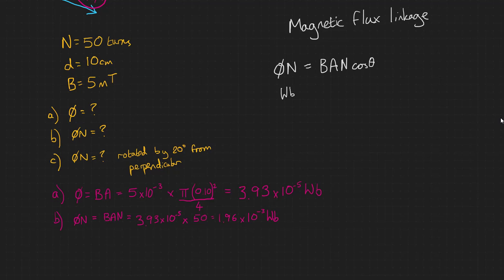And in part C, our loop has been rotated by 20 degrees from the perpendicular. So now we need to use flux linkage equals BAn cos theta. Theta is 20 degrees. So using our value for BAn that we've just calculated, 1.96 times 10 to the minus 3, multiplied by the cosine of 20, gives us 1.85 times 10 to the minus 3 Webers.